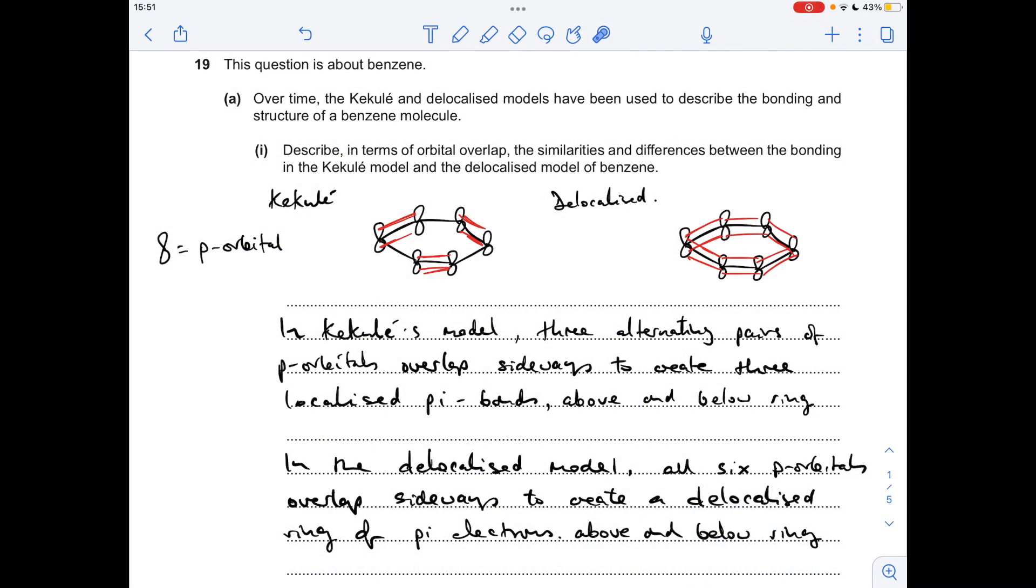So part A we've got to explain or describe in terms of orbital overlap the similarities and differences between the bonding in Kekele's model for benzene and the delocalised model. You'll notice I've drawn these two diagrams up. I would always advise that you do this sort of diagram for a question like this.